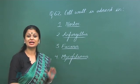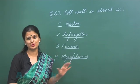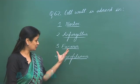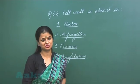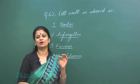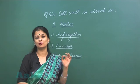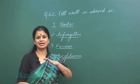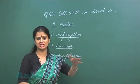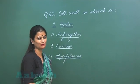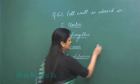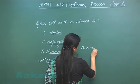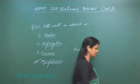Mycoplasma is a bacteria which is without cell wall. It is without cell wall due to which it can change its shape. It is known as pleomorphic. Yes pleomorphic bacteria. It can form several shapes due to the absence of cell wall. So the right option here is option number four.